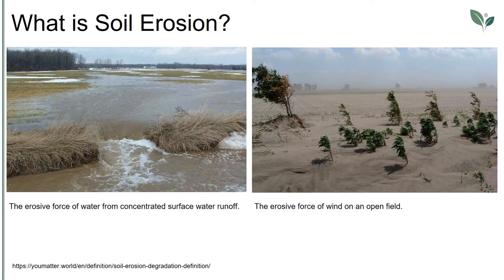What is soil erosion? Soil erosion is a naturally occurring process that affects all landforms. In agriculture, soil erosion refers to the wearing away of a field's topsoil by the natural physical forces of water and wind, or through forces associated with farming activities such as tillage.